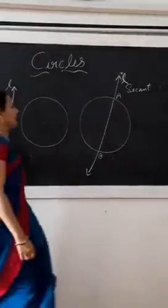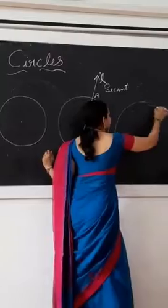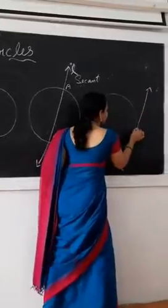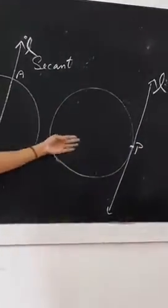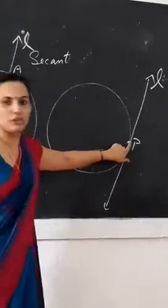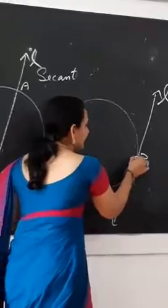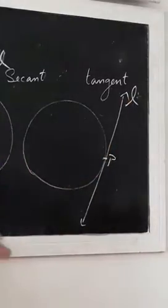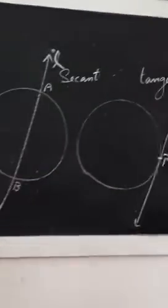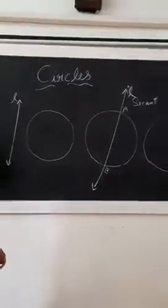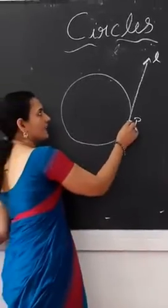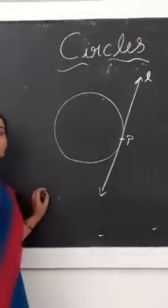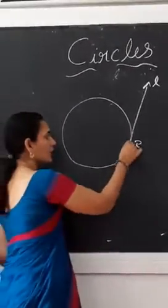Let us consider one more case. Another person may draw the line such that it touches the circle at only one point T. Here this line is called a tangent to a circle. A tangent is defined as a line which intersects the circle at only one point. In this chapter we are going to learn more about tangents to a circle.